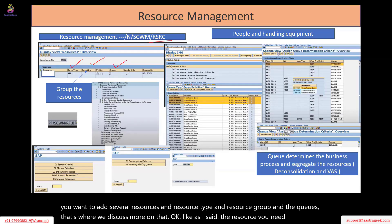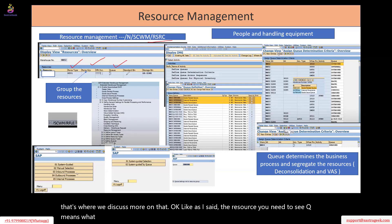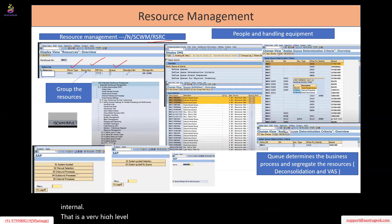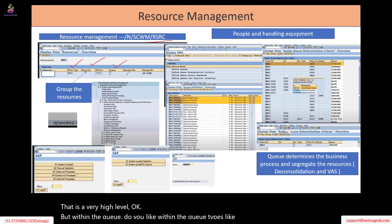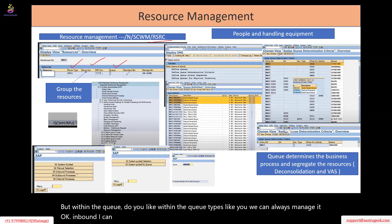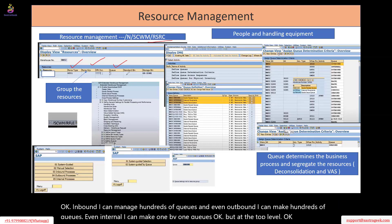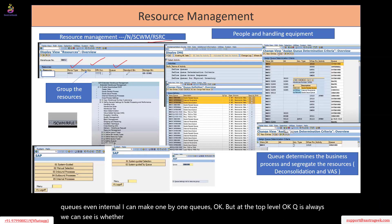Queue means what kind of queues. We have three things very clearly: inbound, outbound, and internal — that is at a very high level. But within the queue types, we can always manage it. For inbound, I can manage hundreds of queues; even for outbound, I can make hundreds of queues; even for internal, I can make my own queues. But at the top level, queue is always either internal, inbound, or outbound.